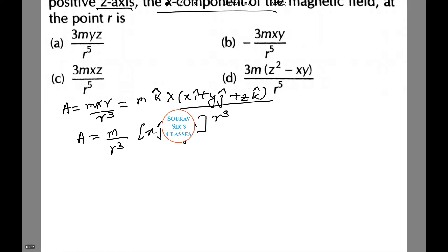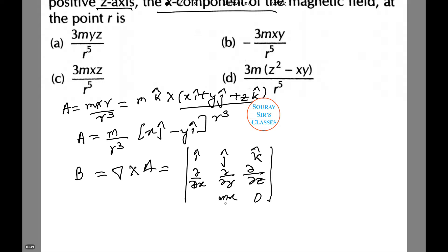Now let's find the magnetic field B equals nabla into A. Therefore i cap, j cap, k cap, d by dx, d by dy and d by dz. The next will be 0, m x by r cube, and for i it is minus m y by r cube.